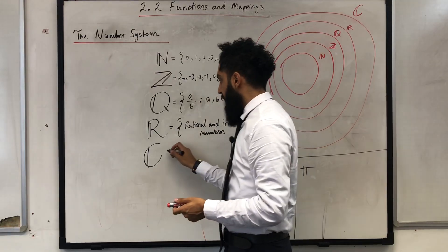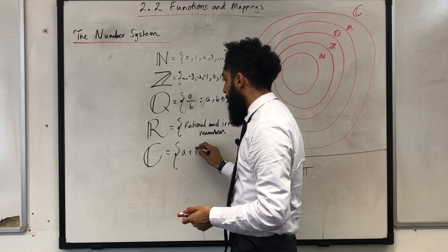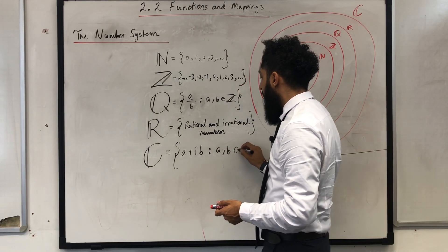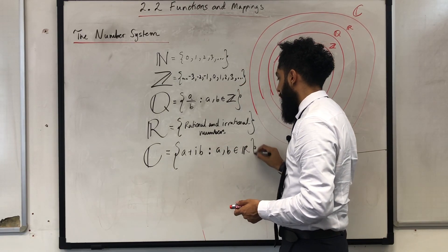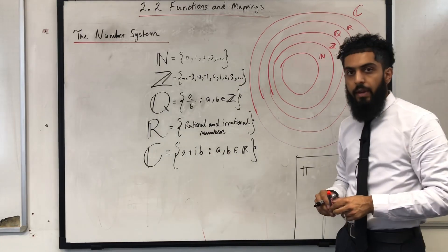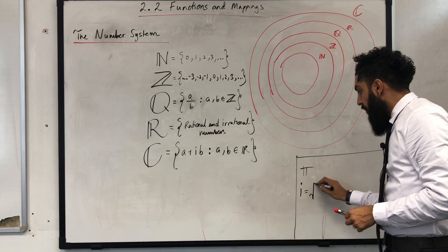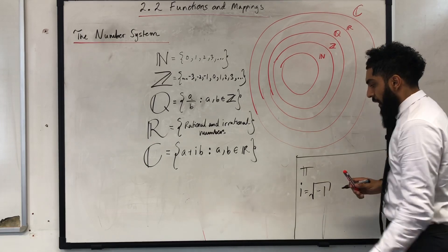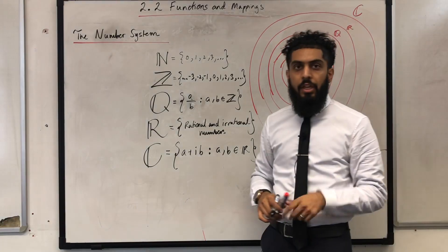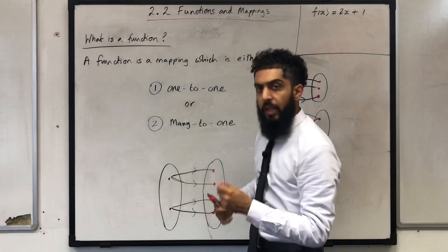Complex numbers consist of numbers of the form A plus iB, such that A and B are elements of the real number set. i is a complex number of the form square root of -1. i is studied in further maths; you do not need to know i for A-level maths.